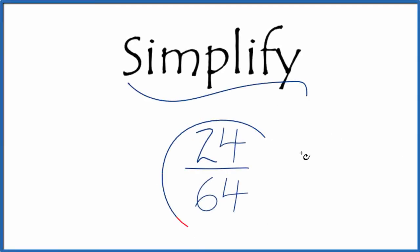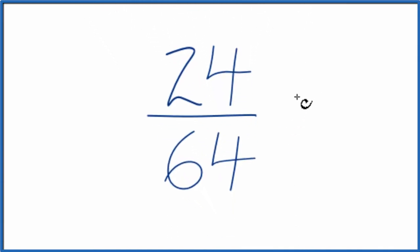Let's simplify the fraction 24/64. What we want to do is find another fraction that's equivalent, that has the same value as 24 divided by 64, just in lowest terms.